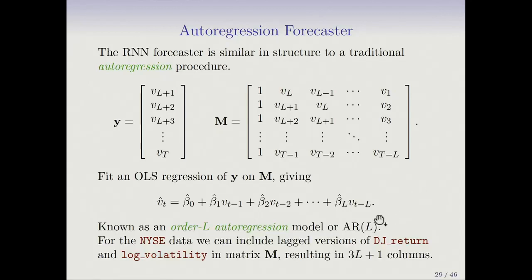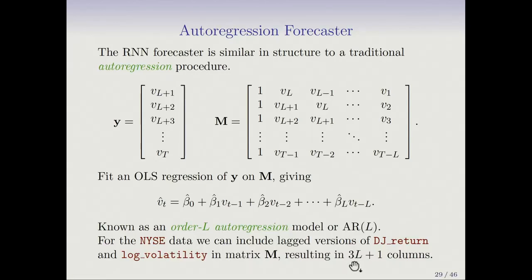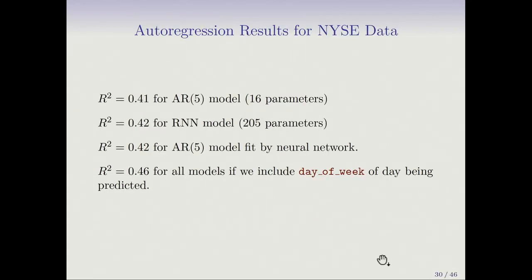This is a very similar data structure to what was used for the RNN, but now we just do a plain linear regression of the response numbers using this data matrix. This is known as an order-L autoregression model, or AR(L). With L equals 5 and three variables, we have 3L plus 1 = 16 columns — three different variables plus the intercept.